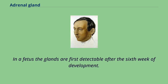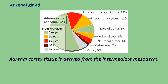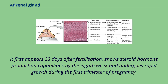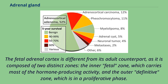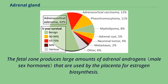In a fetus, the glands are first detectable after the sixth week of development. Adrenal cortex tissue is derived from the intermediate mesoderm; it first appears 33 days after fertilization, shows steroid hormone production capabilities by the eighth week, and undergoes rapid growth during the first trimester of pregnancy. The fetal adrenal cortex is different from its adult counterpart, as it is composed of two distinct zones: the inner fetal zone, which carries most of the hormone-producing activity, and the outer definitive zone, which is in a proliferative phase. The fetal zone produces large amounts of adrenal androgens that are used by the placenta for estrogen biosynthesis.